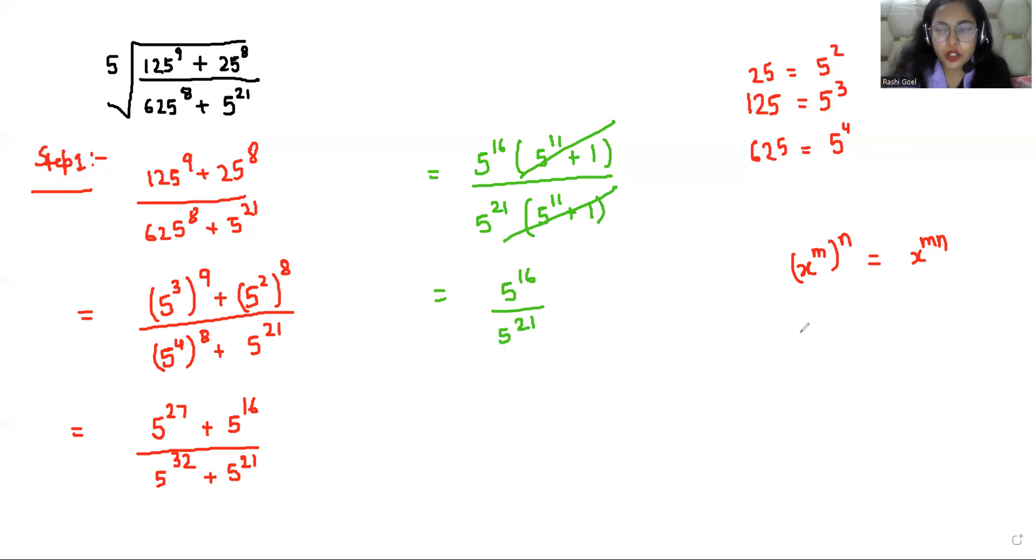We know the quotient rule of exponent, that is x power m over x power n equals x power m minus n. So I'm going to apply this. 5 power 16 minus 21, that is 5 power negative 5. If the power is negative, we can write it as 1 over 5 power 5.